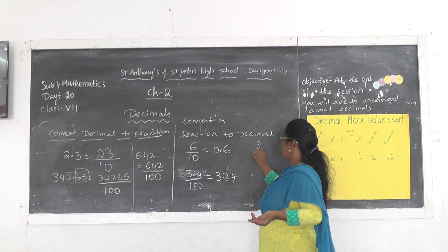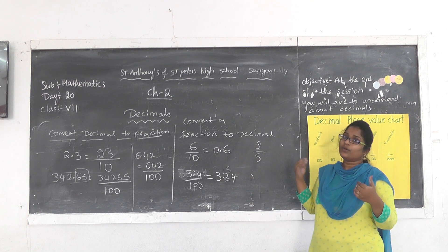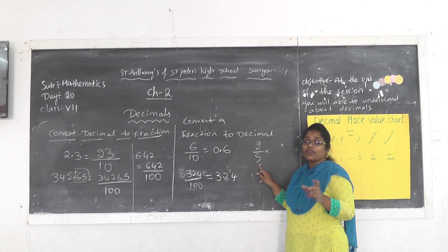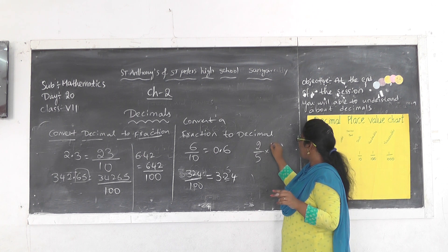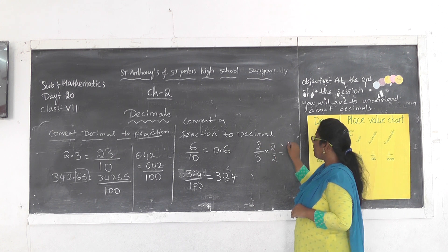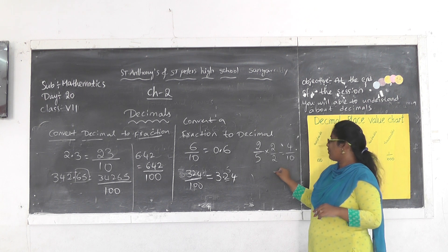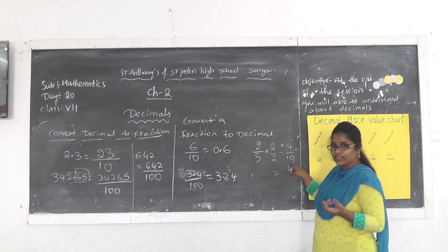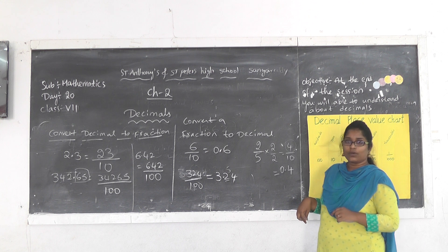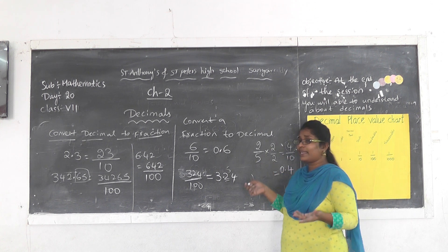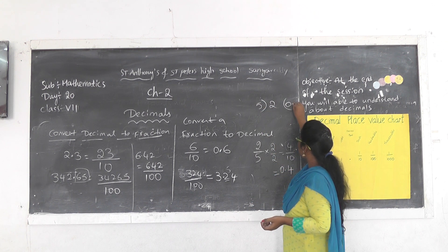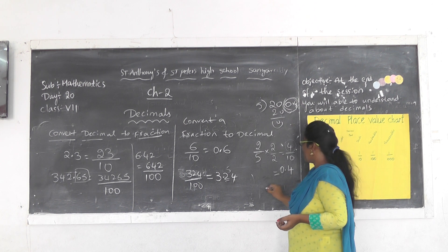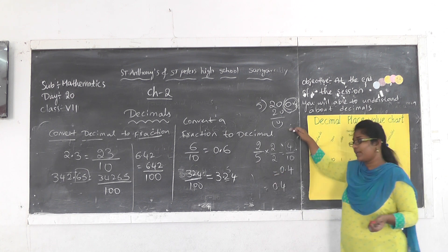If the denominator is not 10 or 100 — for example, 2/5 — we can use the multiplication method. To get 10 in the denominator, multiply both numerator and denominator by 2: 2×2=4 and 5×2=10, giving 4/10. The denominator has 1 zero, so the answer is 0.4. We can also do this by the division process: 2 divided by 5 — since 2 is smaller than 5, we add a decimal point and zero, getting 0.4. That is how we convert a fraction into a decimal number.